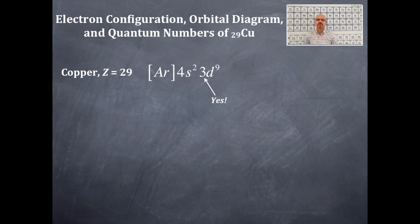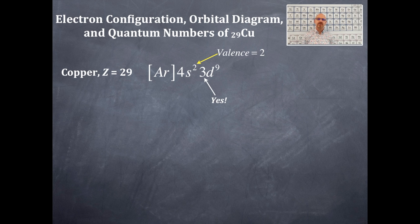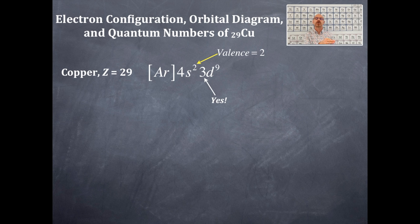How many valence electrons are there in copper? The valence electrons are two. If the configuration ends in a d or an f type orbital, then it has two valence electrons. This is because the largest principal quantum number s orbitals are going to be filled.